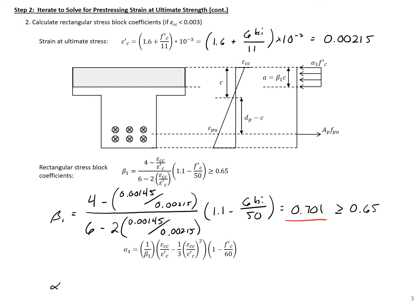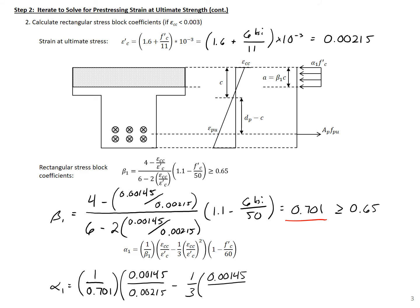Next, we find our alpha 1. Alpha 1 equals 1 divided by beta 1 (0.701), times (0.00145 divided by 0.00215, our assumed top fiber strain over strain at ultimate stress), minus 1.3 times this ratio squared, all times 1 minus 6 ksi divided by 60, which gives us a value of 0.672. So our alpha 1 is 0.672 and our beta 1 is 0.701.